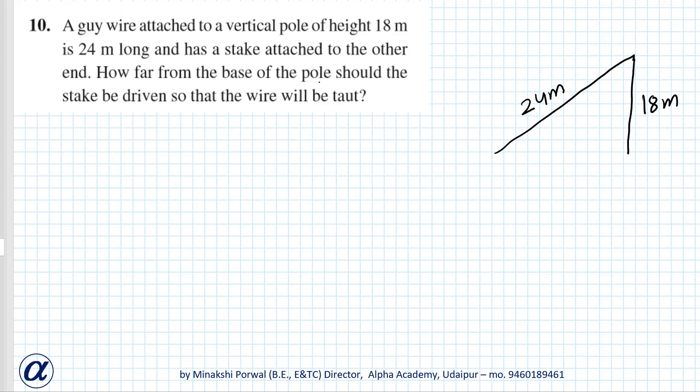How far from the base of the pole should the stake be driven so that the wire will be taut? So basically we have to find this distance.